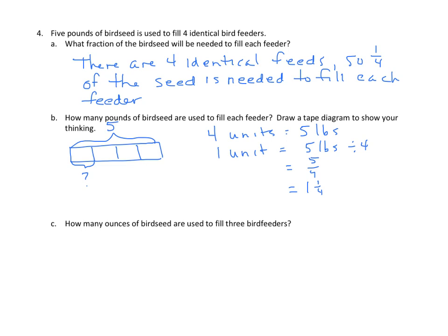How many ounces of birdseed are used to fill three feeders? Well, this is a little different because we need to make note of the fact that we're talking about three feeders. So three feeders, each feeder gets one and one-fourth pounds. We can do this a number of ways. We have to remember that one pound equals sixteen ounces. Get used to knowing these. You're not going to have the conversion factor on your reference sheet anymore.